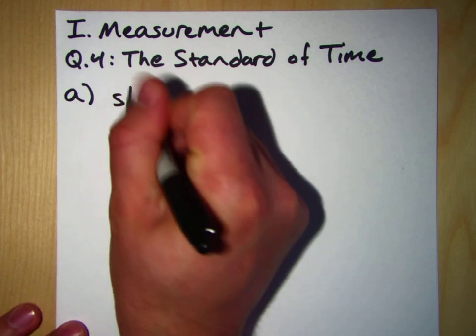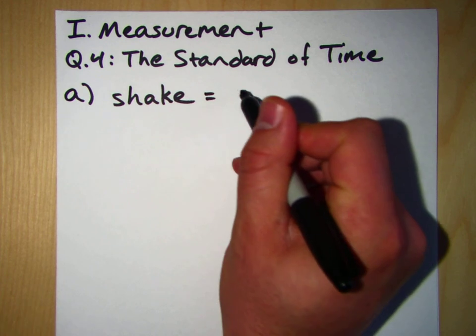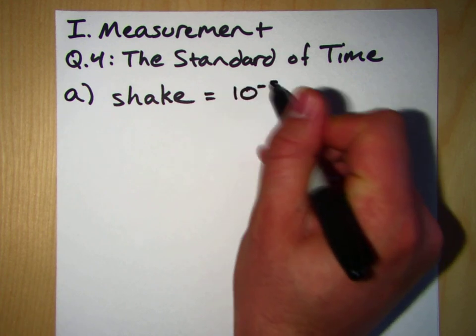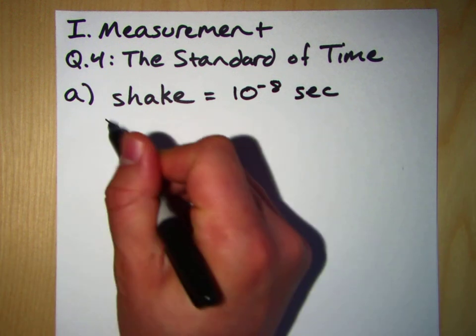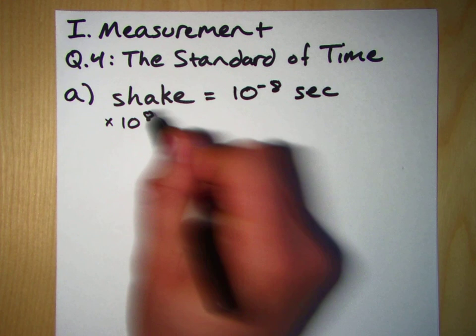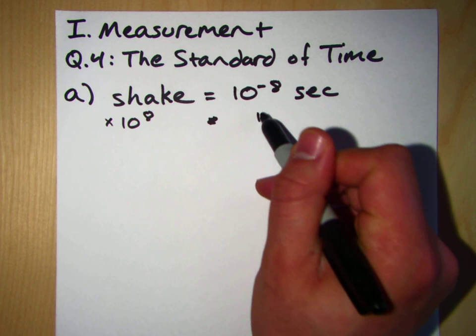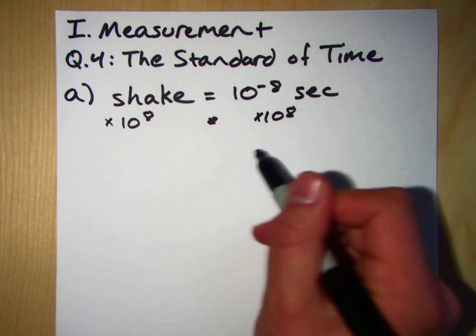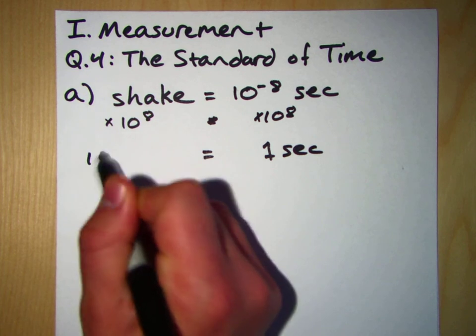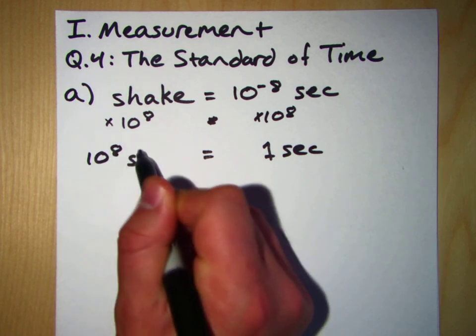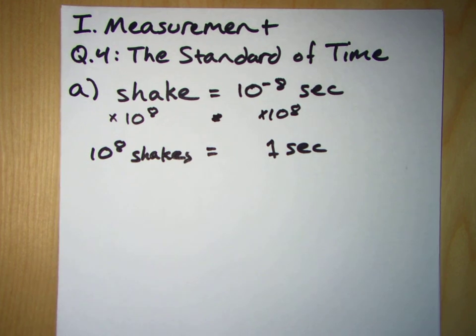So shake is equal to 10 to the minus 8 seconds. And if we multiply both sides of this by 10 to the 8th, then what we get is one second is equal to 10 to the 8th shakes or 100 million shakes.